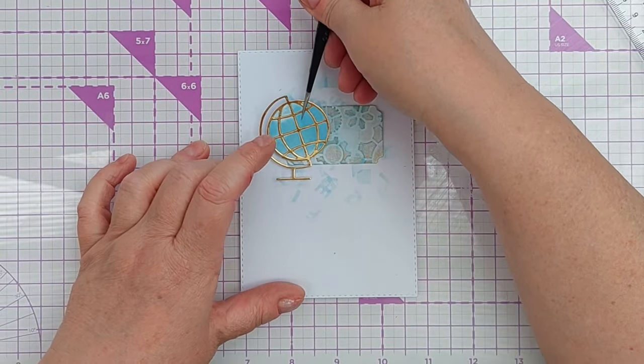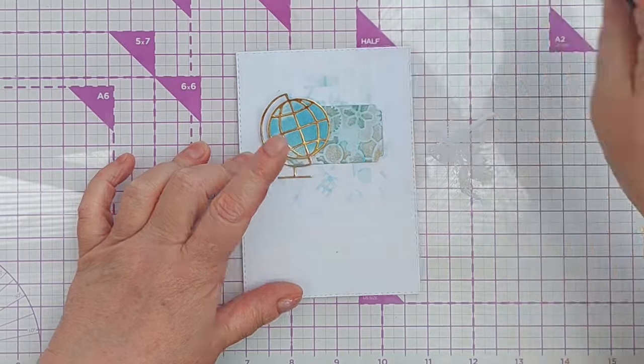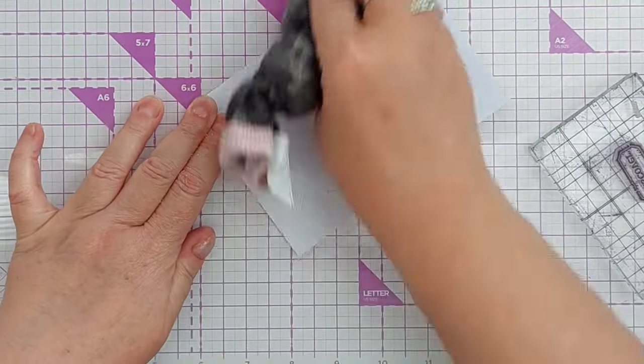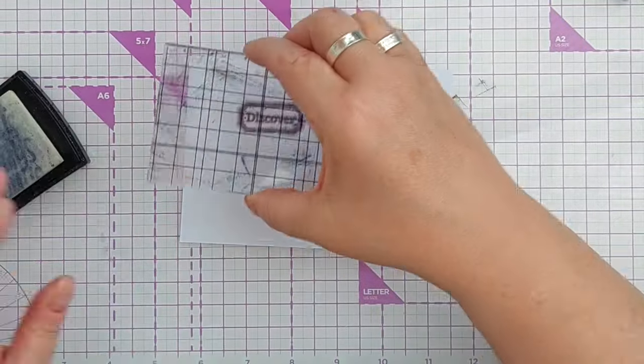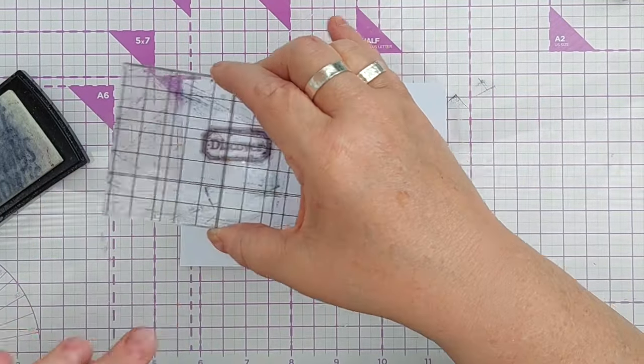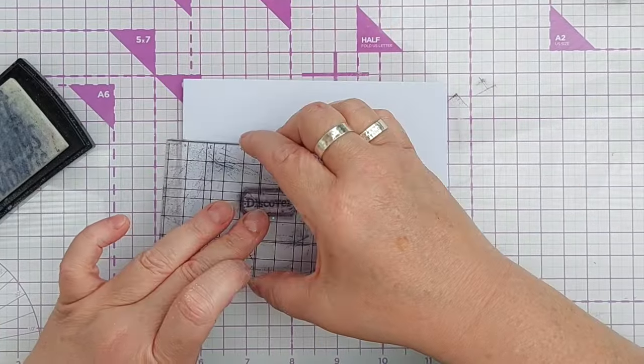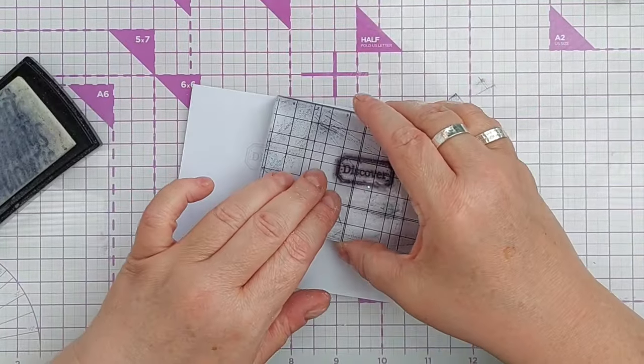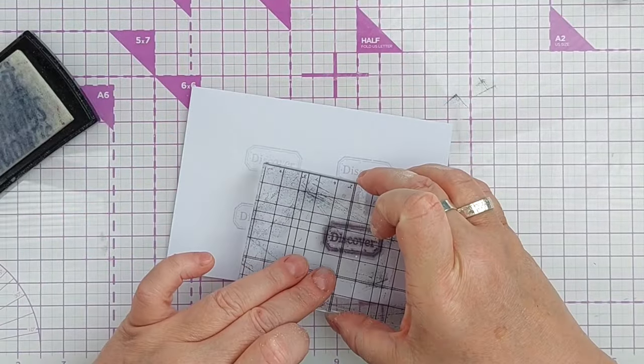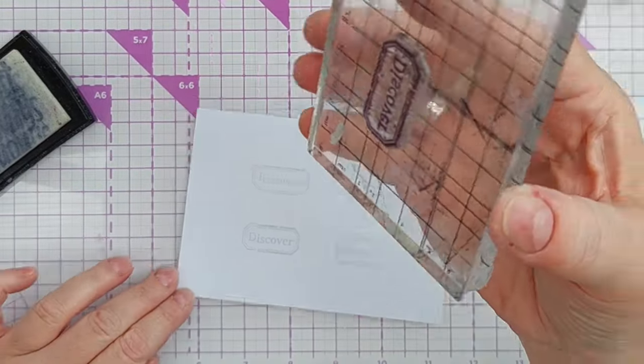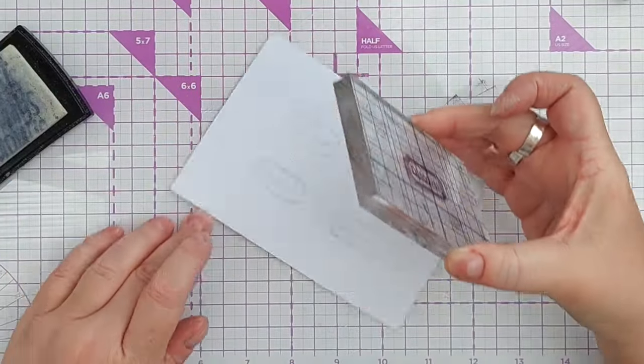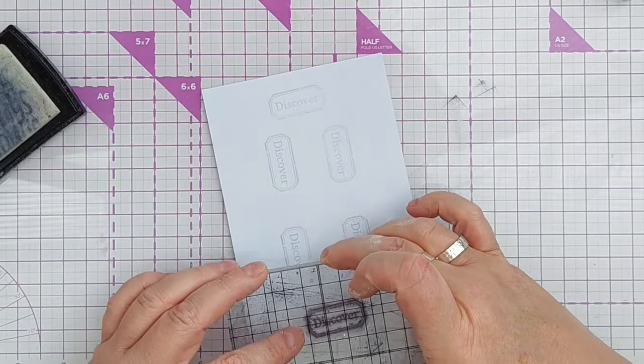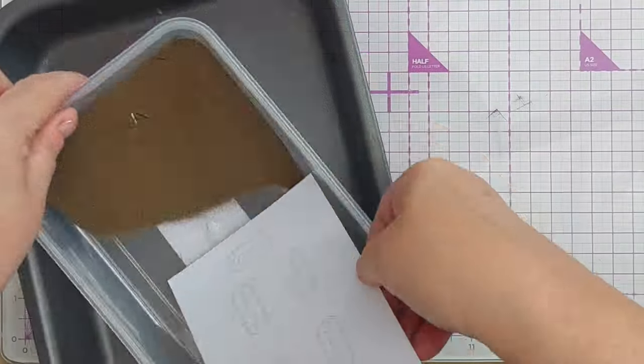For my sentiment, I chose a grungy label stamp that has the word 'discover' on it. I chose this one partly because of the label shape, partly because it's grungy like my distressed label that I created, and partly because of the word 'discover'. I felt that the whole vibe of the card would work well maybe for someone going off to university or going on an adventure or pursuing some sort of related career.